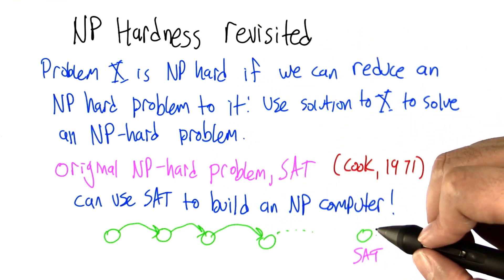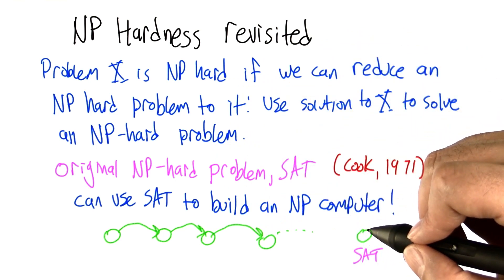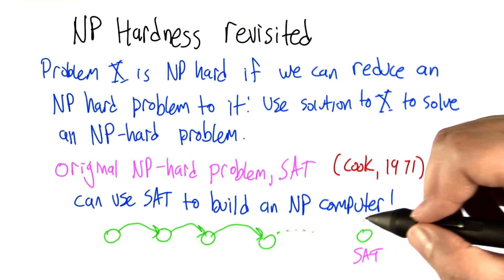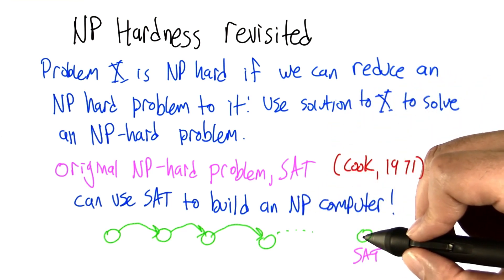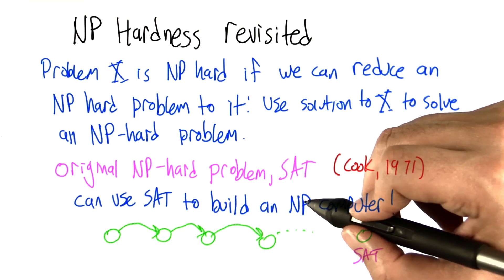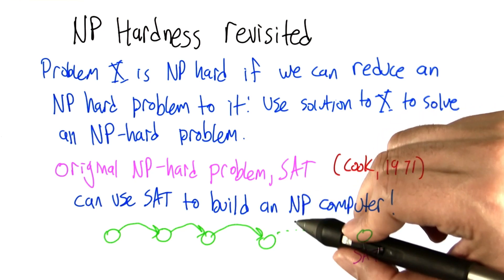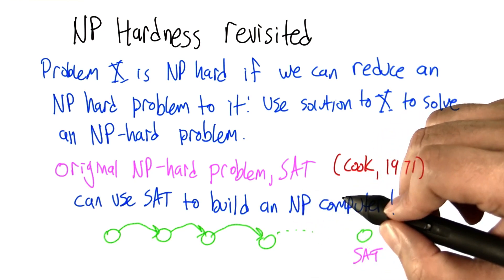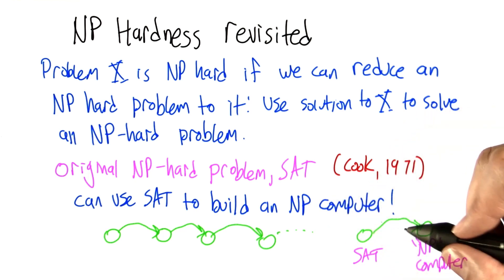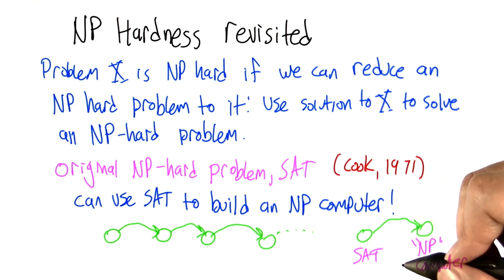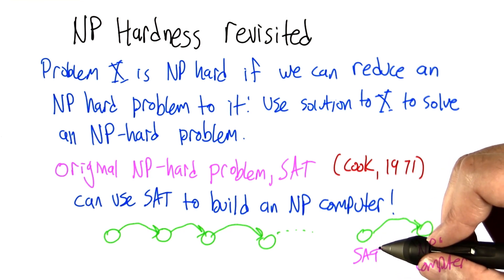So SAT we know is NP-hard, and the way that he showed that is really ingenious. He actually showed that if you had something that could solve SAT, you could use it to simulate in polynomial time essentially an NP-computer, a computer that makes these non-deterministic choices. And since that's the case, anything that we could run on an NP-computer we can turn into a SAT problem, and therefore SAT is as hard as anything in NP.